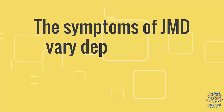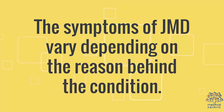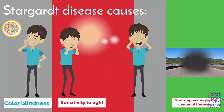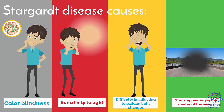Symptoms: The symptoms of JMD vary depending on the reason behind the condition. Stargardt disease causes: 1. Colorblindness. 2. Sensitivity to light. 3. Difficulty in adjusting to sudden light changes. 4. Spots appearing in the center of the vision.